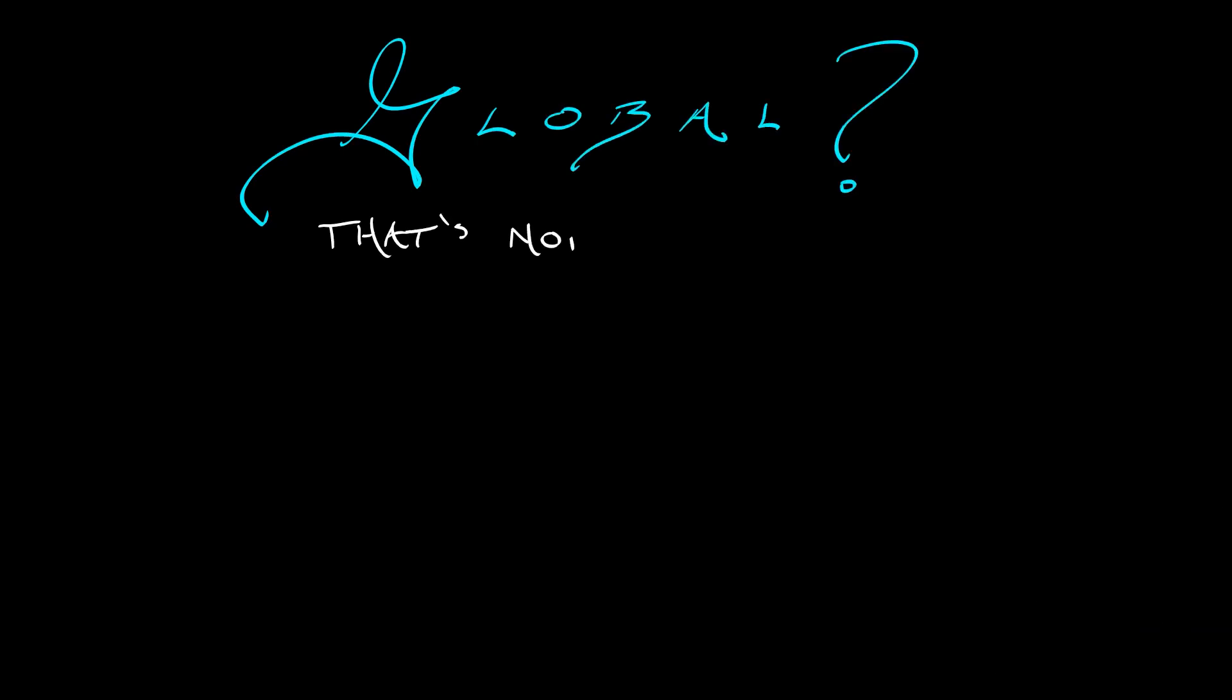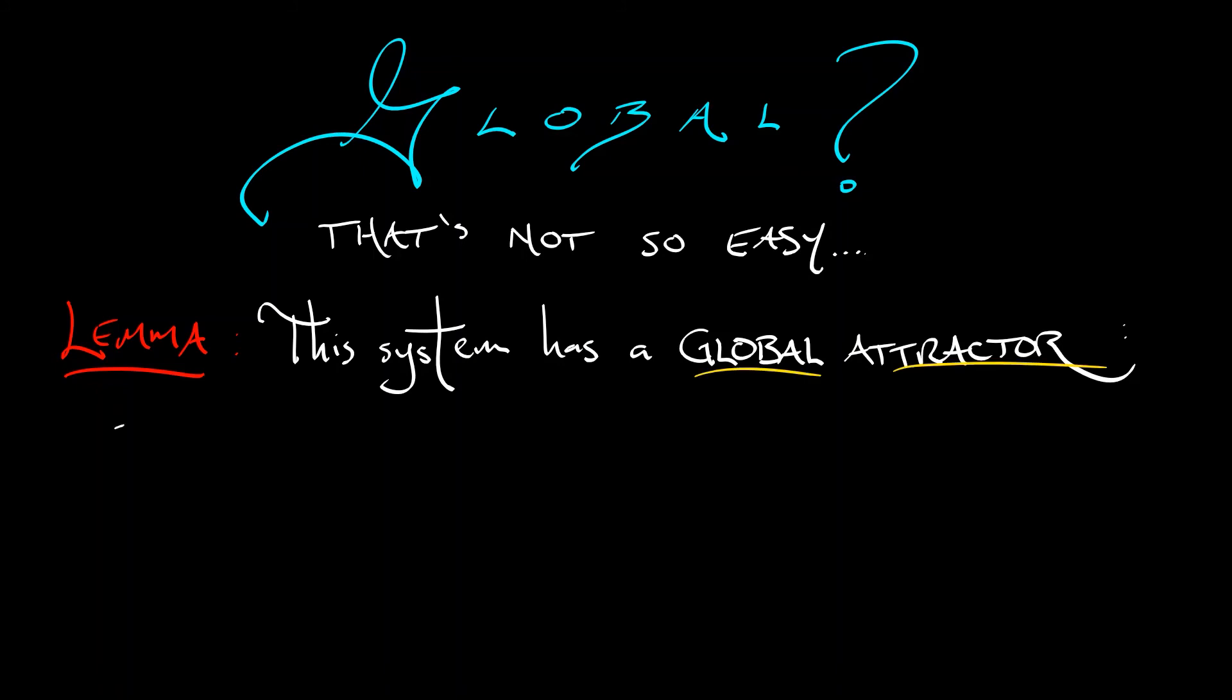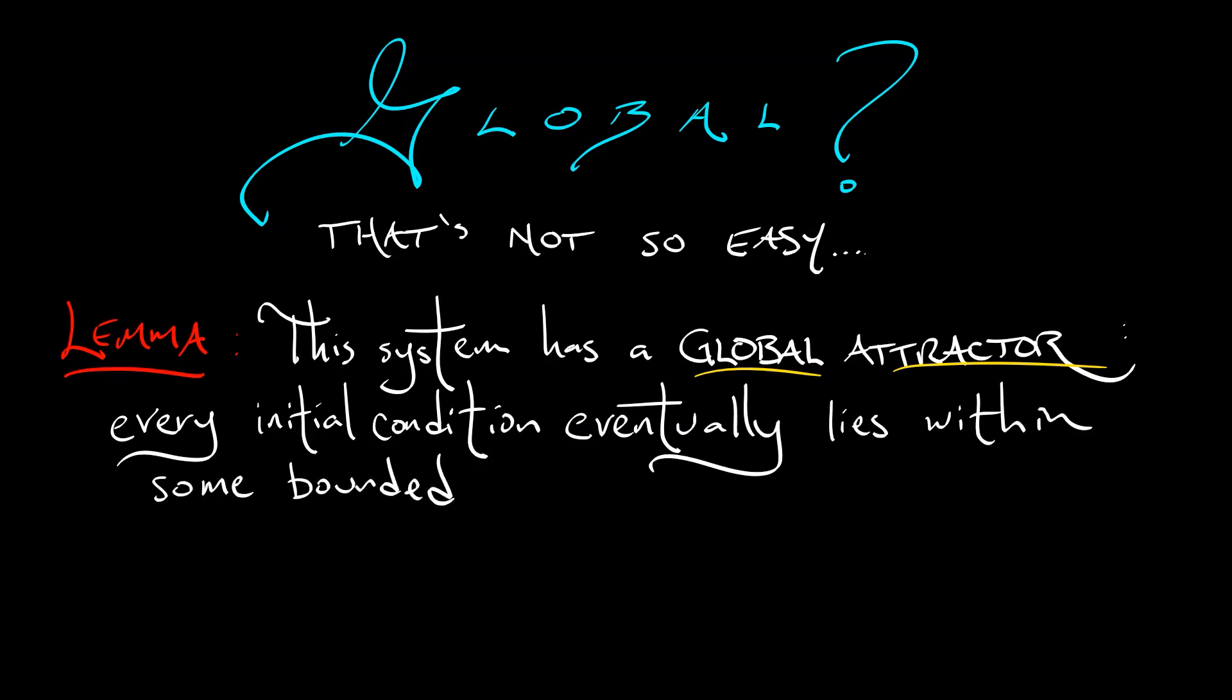But here's something that will help, a lemma. This system, the Lorenz system, has a global attractor. That means that every initial condition eventually lies within some nice bounded set of fixed size. If we use the language that we used back in Volume 2, this has a trapping region. In fact, it's just some ball. It's not even all that big. Once you get inside that ball, you stay inside that ball forever and ever.